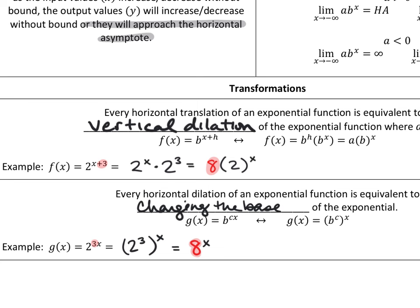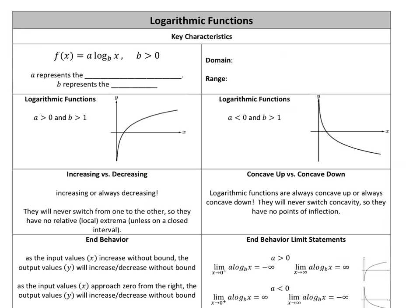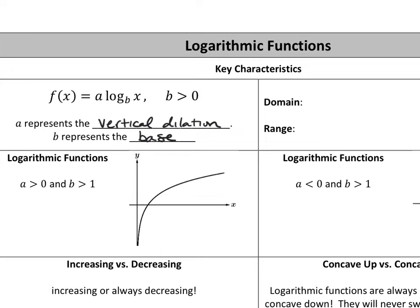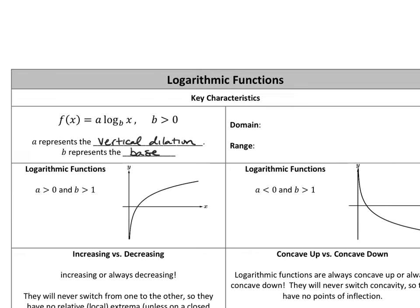Exponentials were largely an Algebra 2 review. We also learned about logarithms, which are typically more challenging. When you have a logarithm, the base is the small number next to the word log — always greater than zero. A represents the vertical dilation, including potential reflections. B always means base — that letter is intentional to keep consistent meaning.